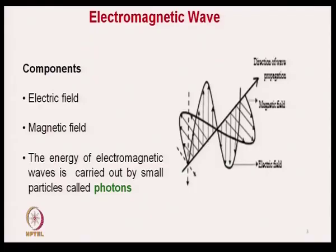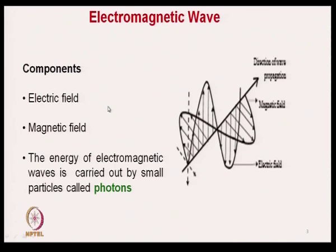The components are electric field and magnetic field, and the energy of electromagnetic waves is carried by small particles called photons. In this picture, we can see a graph showing the electrical field and perpendicular to that is the magnetic field. These two fields are perpendicular to the direction of propagation.